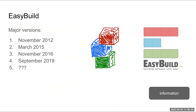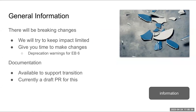As Kenneth mentioned, EasyBuild major versions go back to 2012 for version one, with about two and a half to three years between versions, so we look a little overdue for a major version. There will be breaking changes — we're going to try to minimize them as much as possible. We'll give deprecation warnings, and some changes will be deprecated in EasyBuild 6, giving you roughly another three years to make the necessary changes.